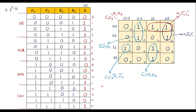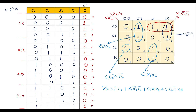So now we can write the Boolean expression. Z = X1·C1̄·C2 + X1·X2̄·C1̄ + C1·X1·X2 + C1·C2·X1̄·X2̄ + C1̄·X1̄·X2.